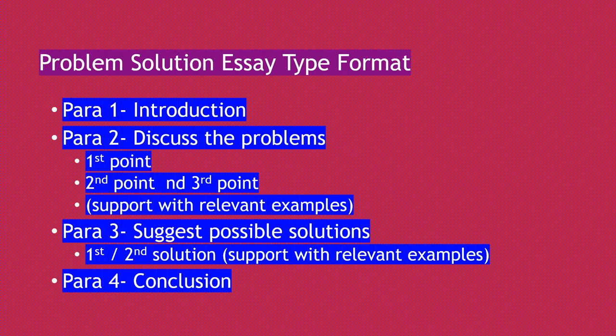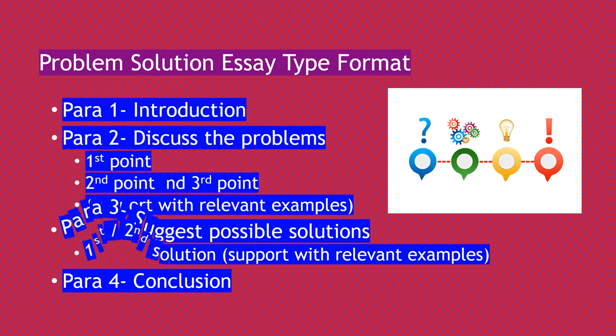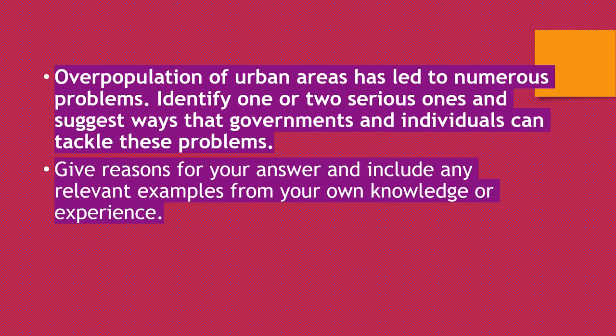Let's take a look at the problem-solution essay type format. You should be making four to five paragraphs: the first paragraph is an introduction; the second discusses the problems — list down different points and support them with relevant examples; paragraph three suggests possible solutions with relevant examples; and finally the conclusion. The question is: overpopulation of urban areas has led to numerous problems. Identify one or two serious ones and suggest ways that governments and individuals can tackle these problems. Give reasons for your answer and include any relevant examples from your own knowledge or experience.